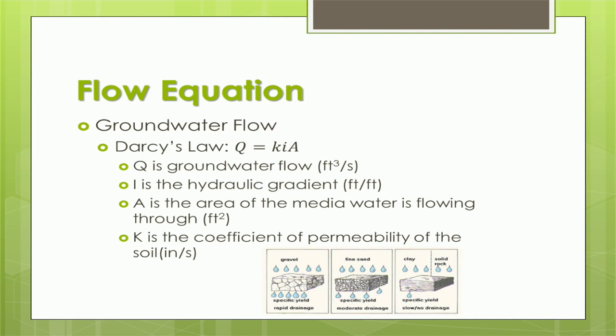The flow of water, Q, is equal to the product of the hydraulic gradient, I, the area of the media through which the water is flowing, A, and the coefficient of permeability of the soil, K. In short, Q = KIA. Darcy found that water moved through highly porous soils like gravel or sands at a much faster rate than less permeable soils like clay or solid rock.